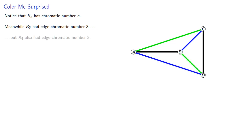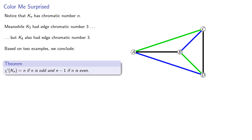Notice that Kn has chromatic number n. Meanwhile, K3 had edge chromatic number 3, but K4 also had edge chromatic number 3. Based on two examples, we conclude: the edge chromatic number of Kn is n if n is odd, and n minus 1 if n is even.